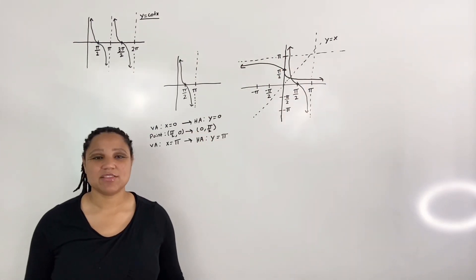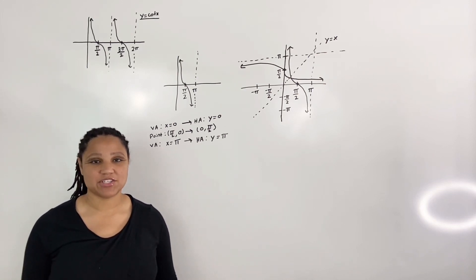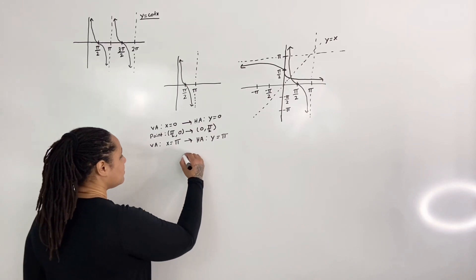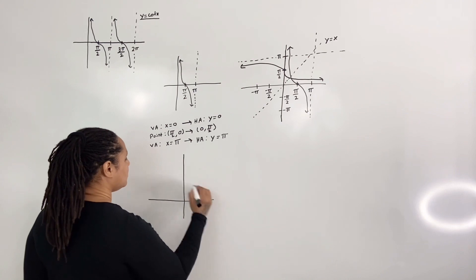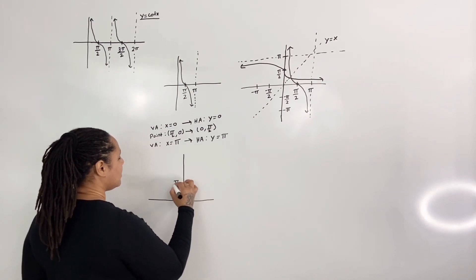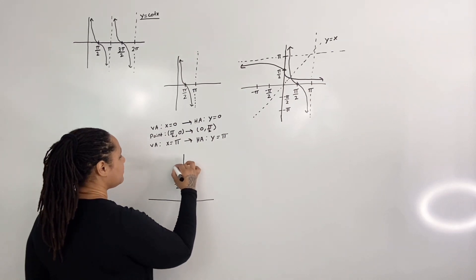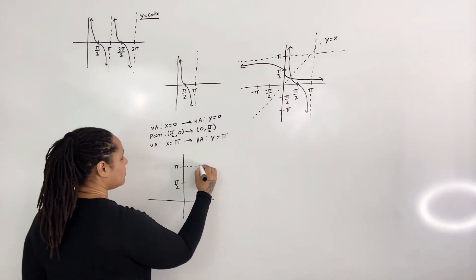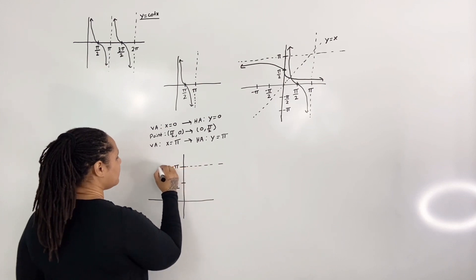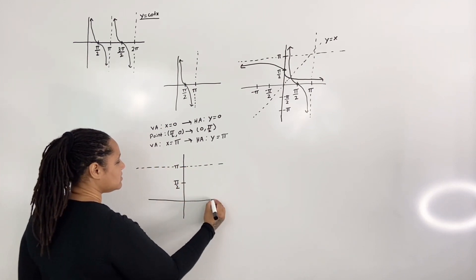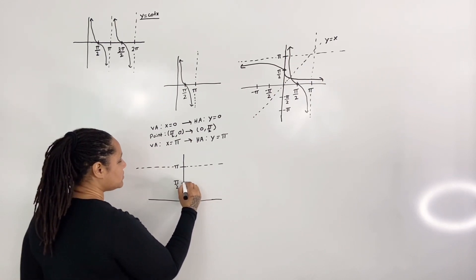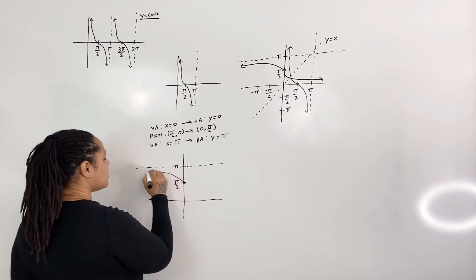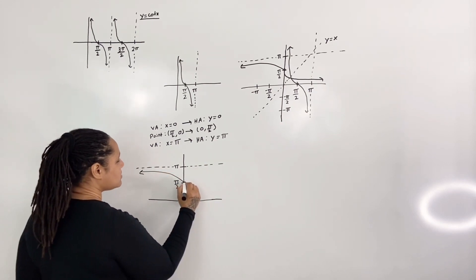Now, let's separate the new graph from the old one so we can get a good look at the graph of inverse cotangent. Here we have pi over 2 and pi, with a horizontal asymptote at pi and a horizontal asymptote at 0, and the graph swings this way and that way.